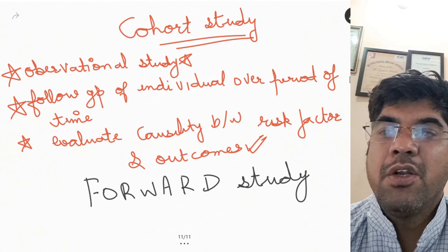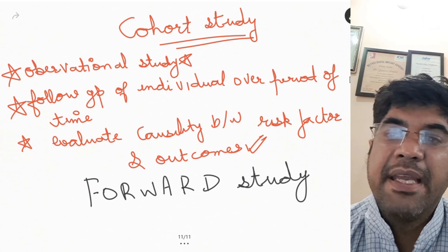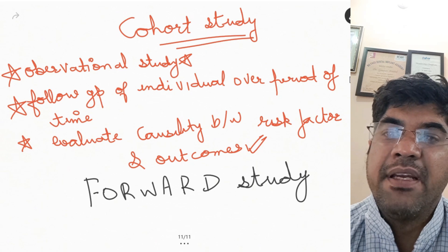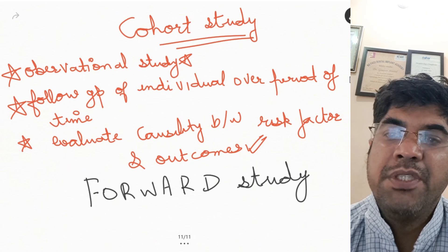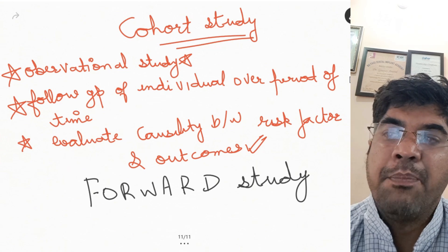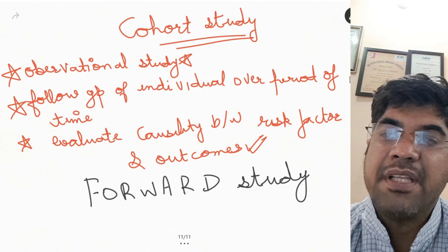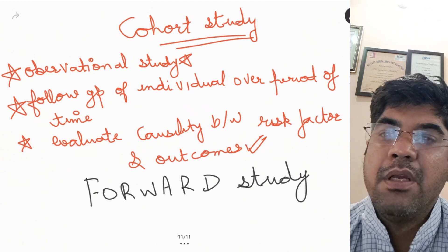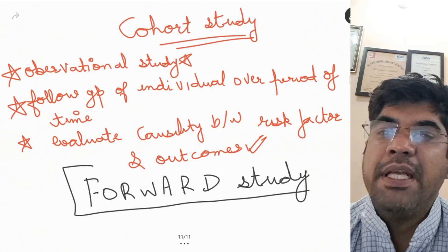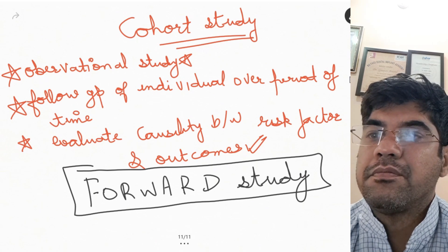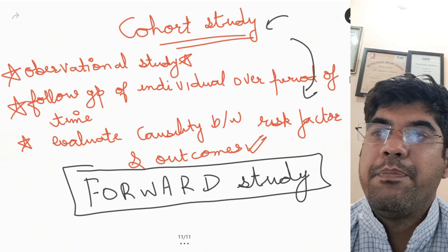Cohort studies are also known as forward studies as they start with people free of disease and follow them over time to observe the development of disease. The main difference between case-control and cohort studies is how participants are selected: in case-control, participants are selected based on disease status and compared in terms of exposure; in cohort, participants are selected based on risk factor status and followed over time. Cohort studies are generally considered more reliable in establishing causality as they are less prone to bias.